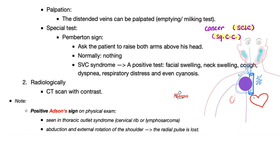By palpation, you can actually empty or milk these vessels. And if they empty, it proves to you that these are veins. Next, you can find a positive Pemberton sign. What's that? Ask your patient to raise both arms above the head. In normal people, nothing happens. But in people with superior vena cava syndrome, you get facial swelling, neck swelling, cough, dyspnea, and respiratory distress, because raising both hands above your head makes this compression or obstruction more obvious and easier to notice.